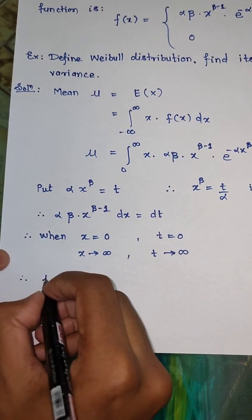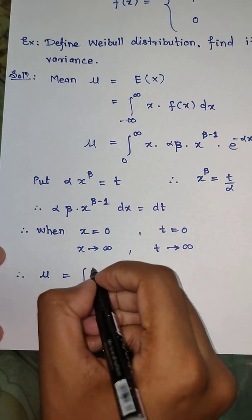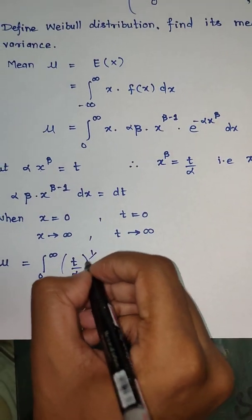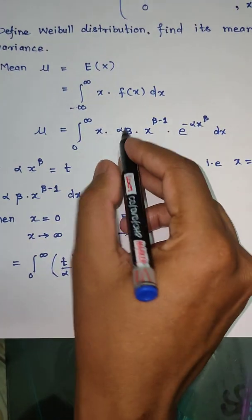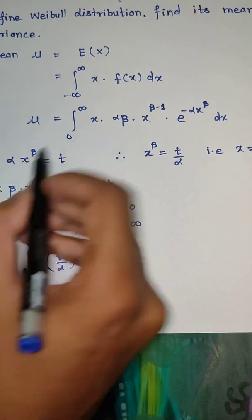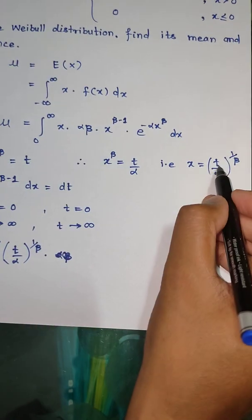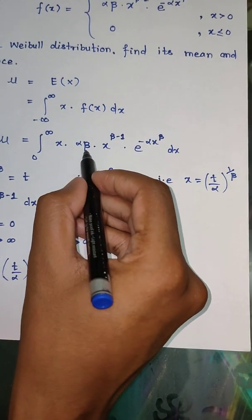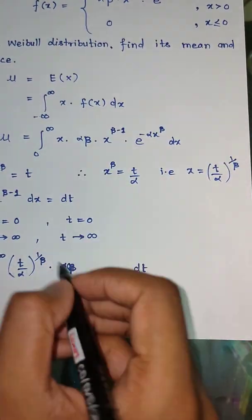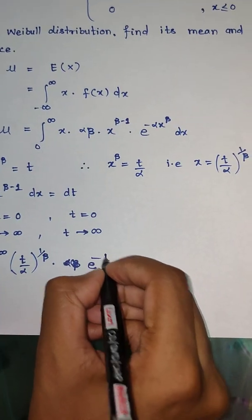Therefore, mu equals the integral from 0 to infinity, where in place of x we substitute (t/alpha)^(1/beta). In place of alpha·beta·x^(beta−1) dx we substitute dt, and e^(−alpha·x^beta) becomes e^(−t). So the expression becomes the integral of (t/alpha)^(1/beta) · e^(−t) dt from 0 to infinity.